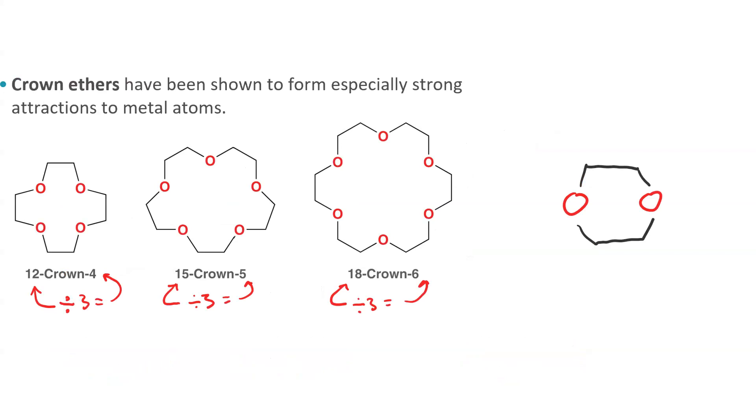If you go to name dioxane as a crown ether, there are 1, 2, 3, 4, 5, 6 atoms, so it would be 6-crown-2. You could also have 9-crown-3.